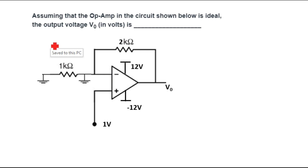Hello guys, today we will solve this question. Assume that the op-amp in the circuit shown below is ideal. The output voltage V0 in volts is what we need to calculate. This is a GATE question, so let's start.